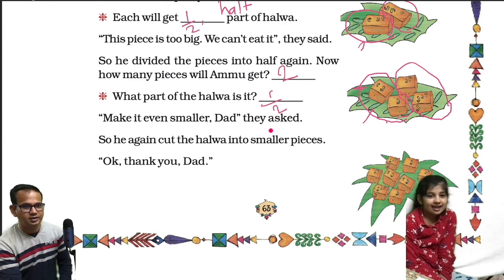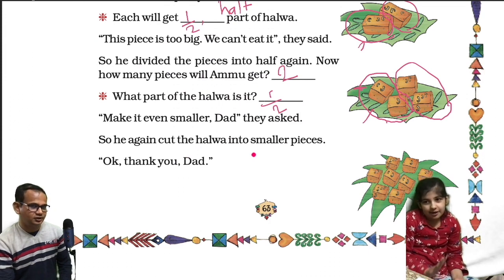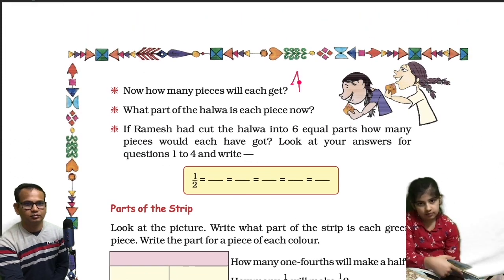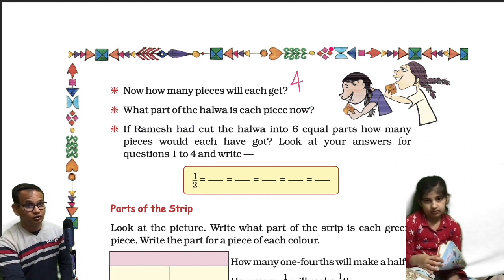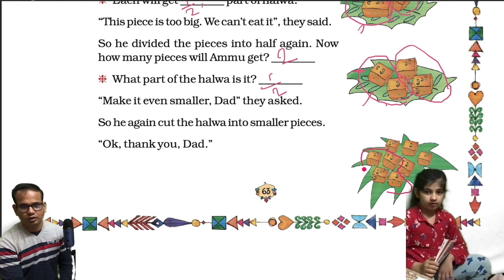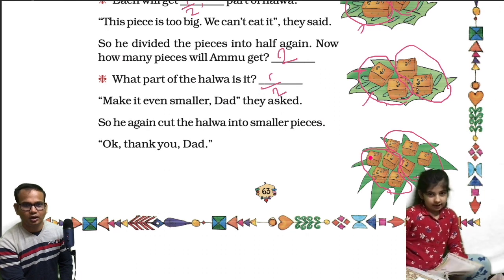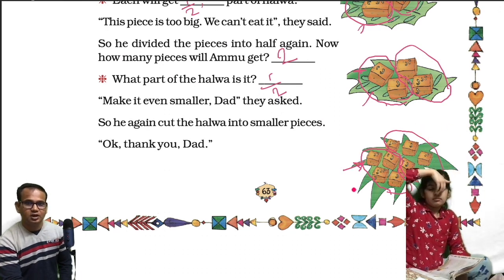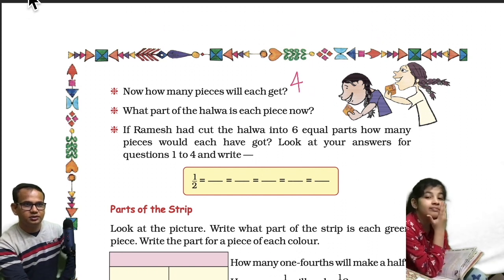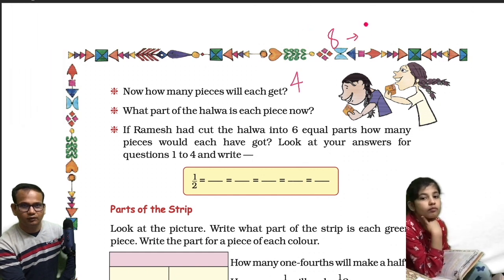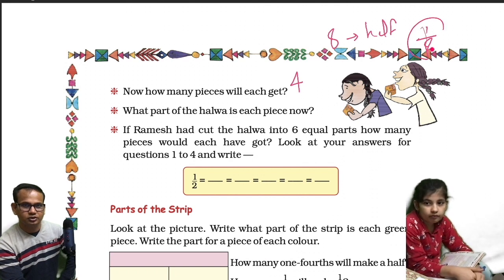Make it even smaller, dad. So he again cut the halwa into smaller pieces. Thank you, dad. Now they can eat it very easily. Now how many pieces will each get? Four. What part of the halwa is each piece now? One by eight. They made four equal parts for each child, and one piece is one by eight. Total 8 pieces were made of the halwa. So one by eight — correct!